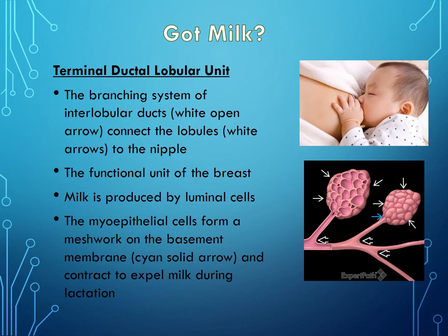The terminal ductal lobular units are a big deal — this is where the action happens. Milk is produced by the luminal cells, and then the myoepithelial cells help to contract and expel that milk into the duct system. Think of it like a tree: the terminal ductal lobular units are at the end of a branch, and the milk travels into the ducts and eventually to the nipple.